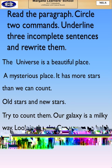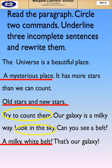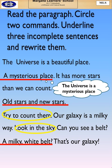I have solved this exercise for you as well. Let us first underline the three incomplete sentences: 'A mysterious place,' 'Old stars and new stars,' and 'A milky white belt.' Now circle the two commands: 'Try to count them' and 'Look in the sky.' I have solved one of the incomplete sentences for you — 'A mysterious place.'